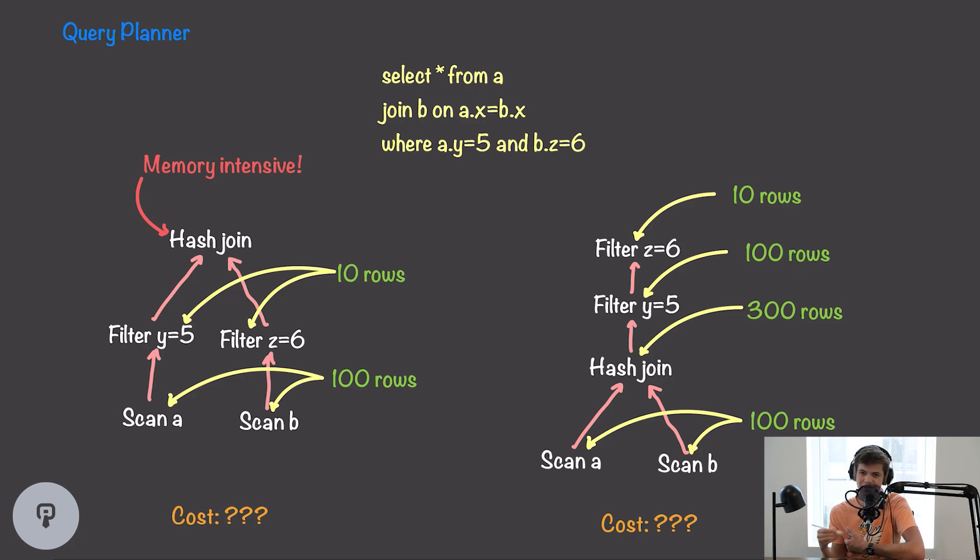In order to do this, we have to look at some statistics about our data. For example, our database is going to keep track of the size of each table. So, let's say A and B are both 100 rows. We now know that we have to scan 100 rows in each of these operations. And we can also look at the distribution of each of these columns. So, let's say there's 10 unique values for Y and 10 unique values for Z. If we have 100 rows and there's 10 possible values, it's pretty likely that we're going to end up with 10 rows in our results after this filter operation. Then once that's done, we can join them together, and our operation is done.